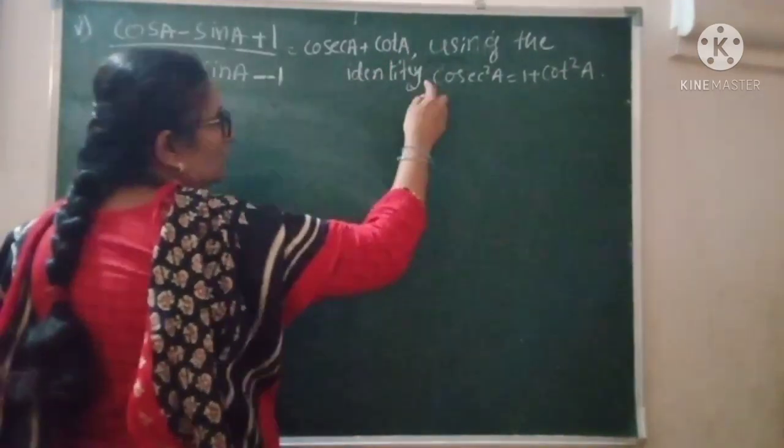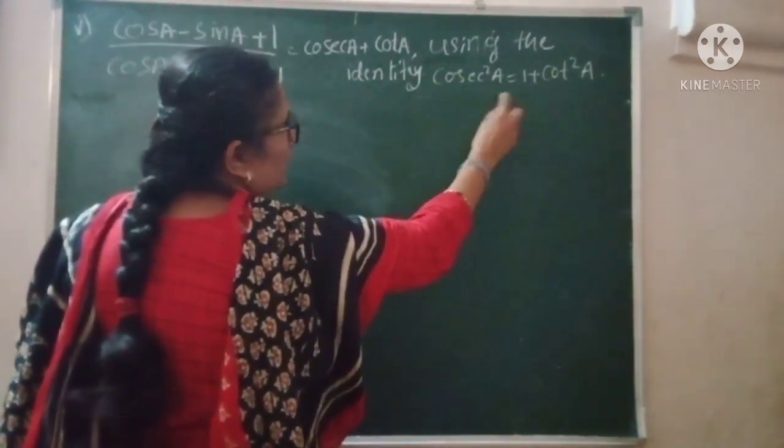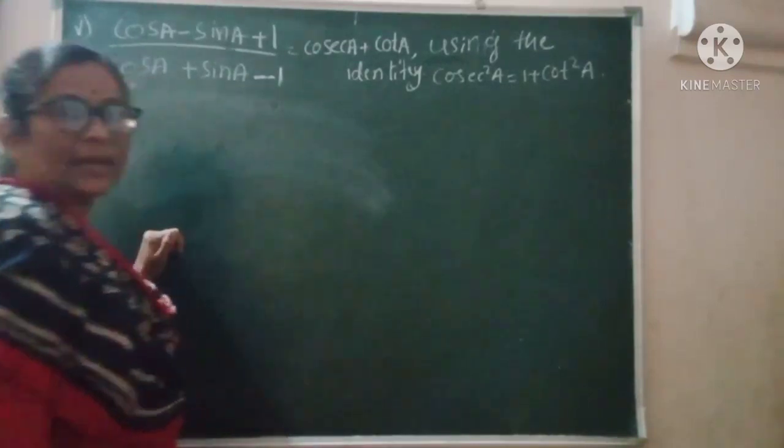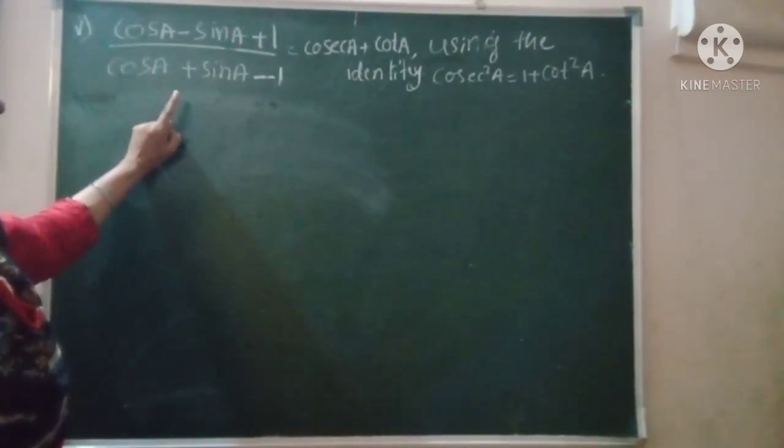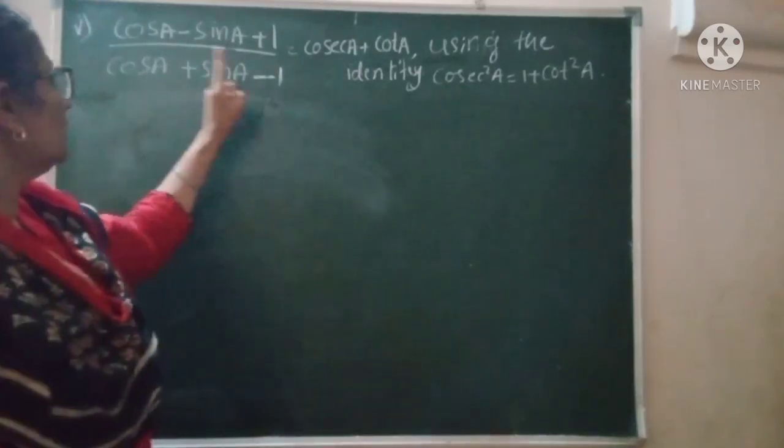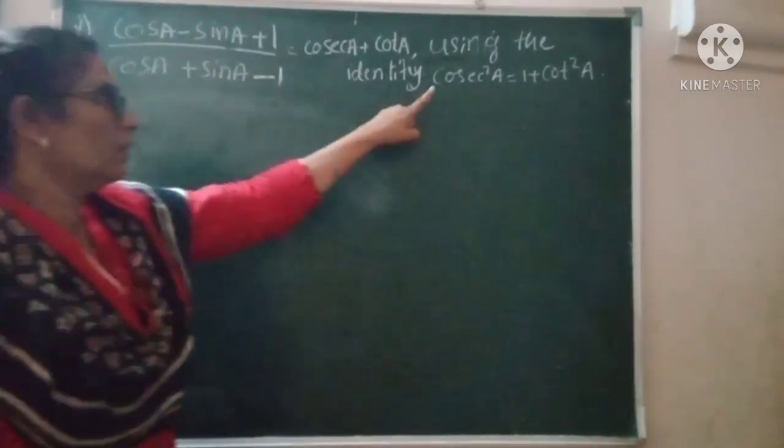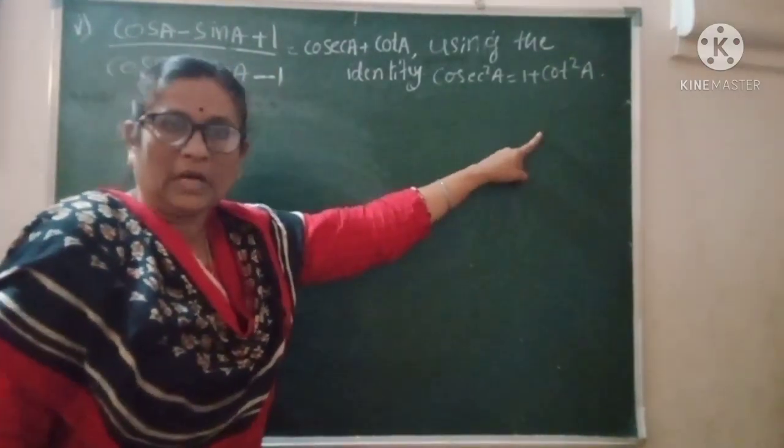In this question, we will use the identity cosec² A = 1 + cot² A. We need to convert either cos to cot or convert to another form - we'll convert both terms.